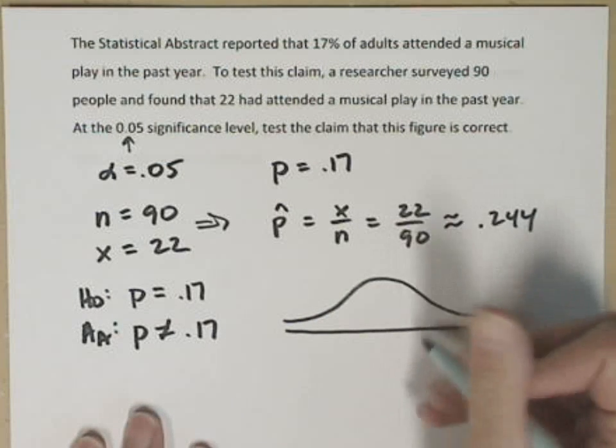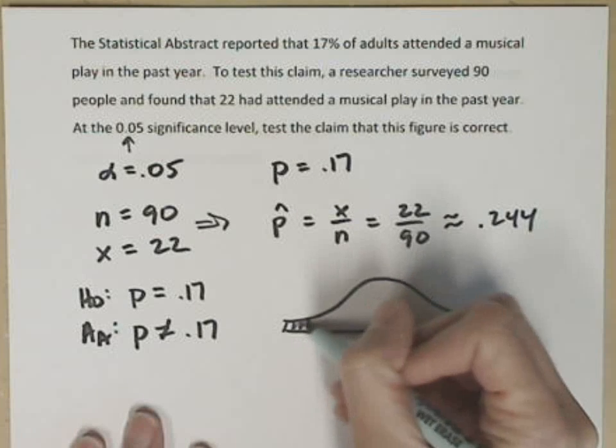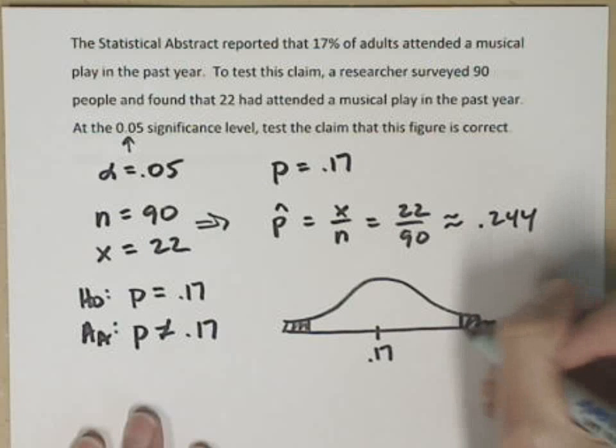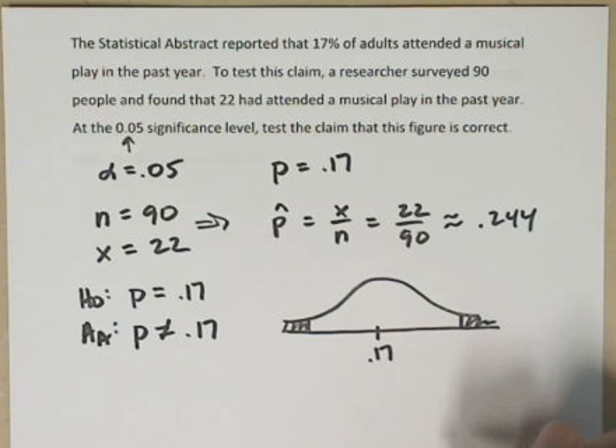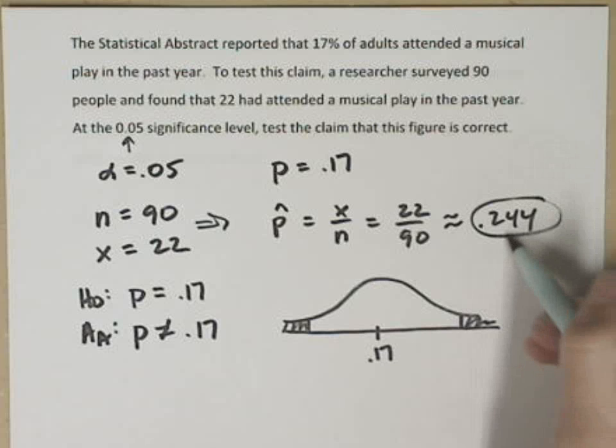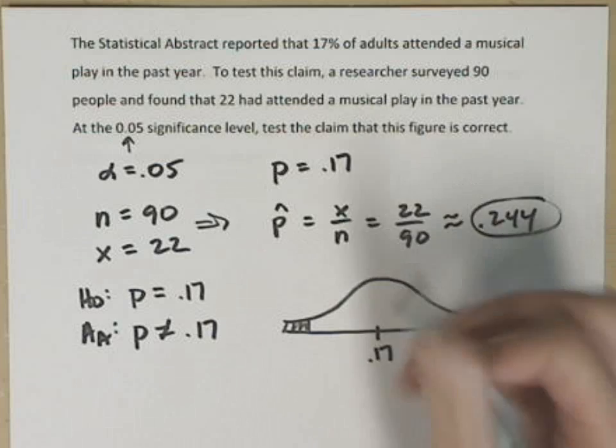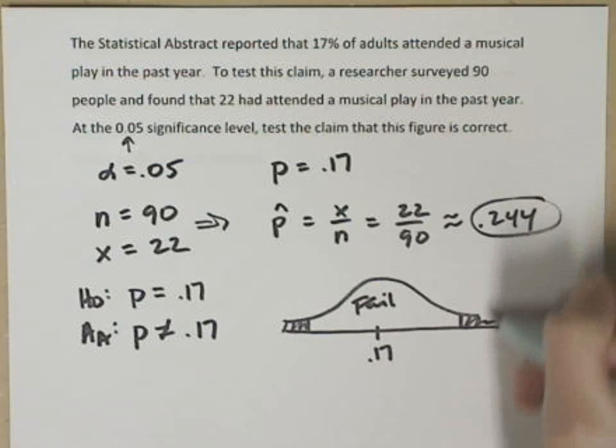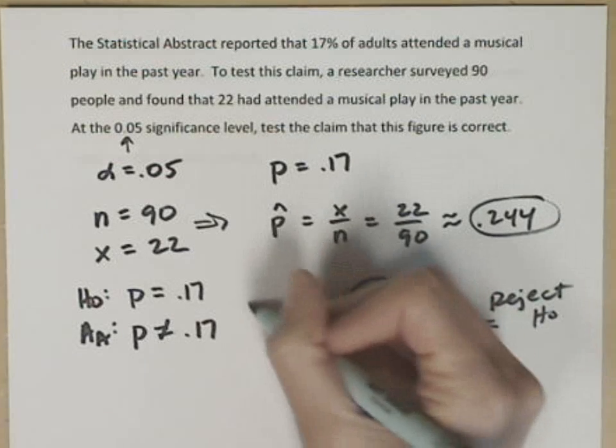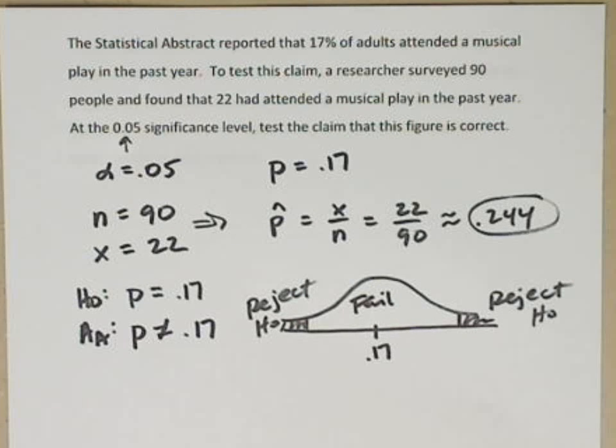If I sketch my normal curve, I've got a two-tail test. .17 is right here in the middle. I have a rejection region in the left tail and a rejection region in the right tail. What I want to figure out is where .244 lies. Is .244 in my fail-to-reject region, or is it over here in my rejection region?